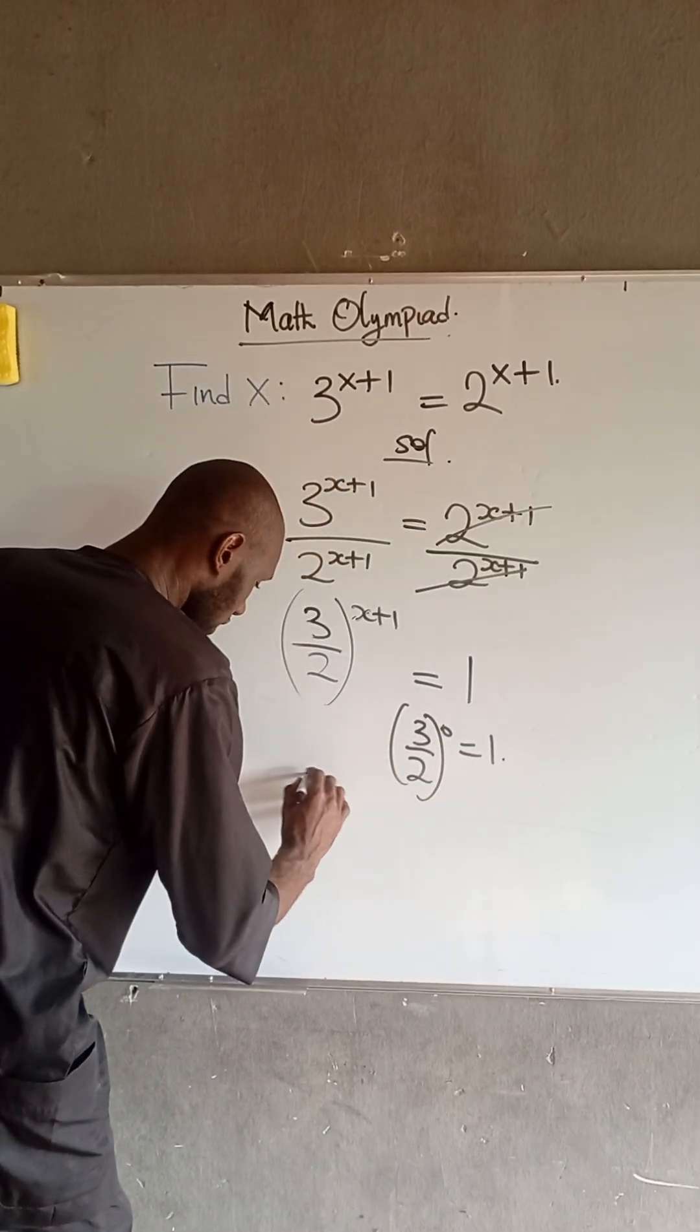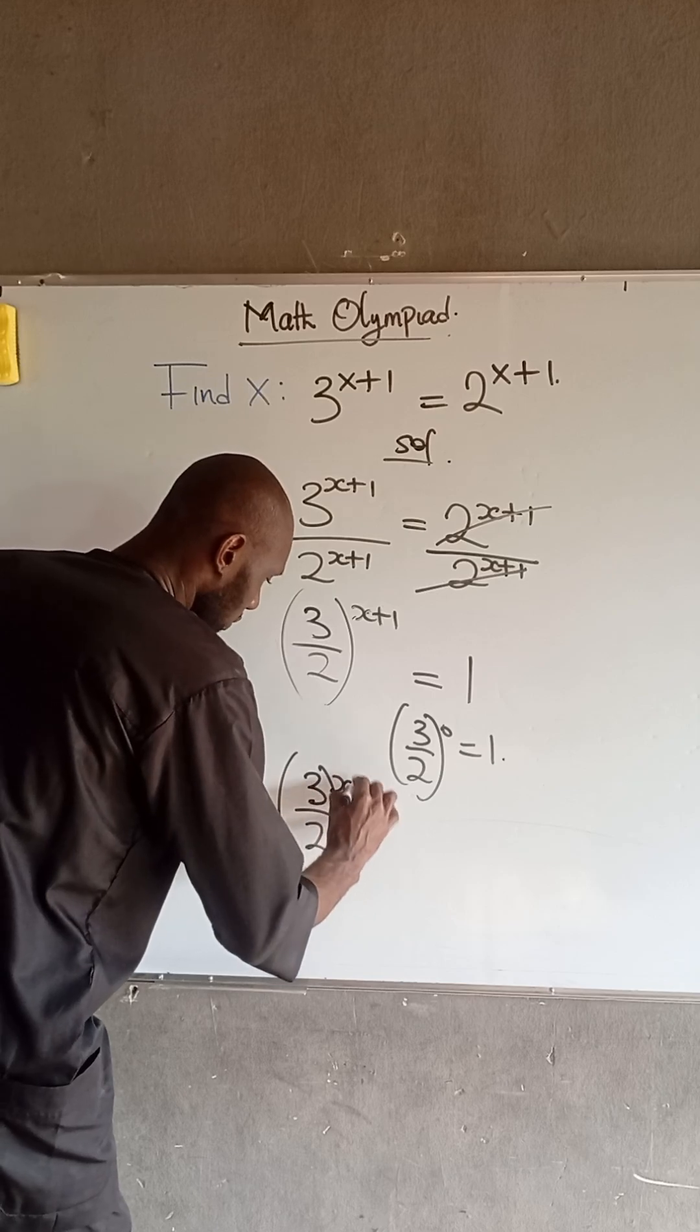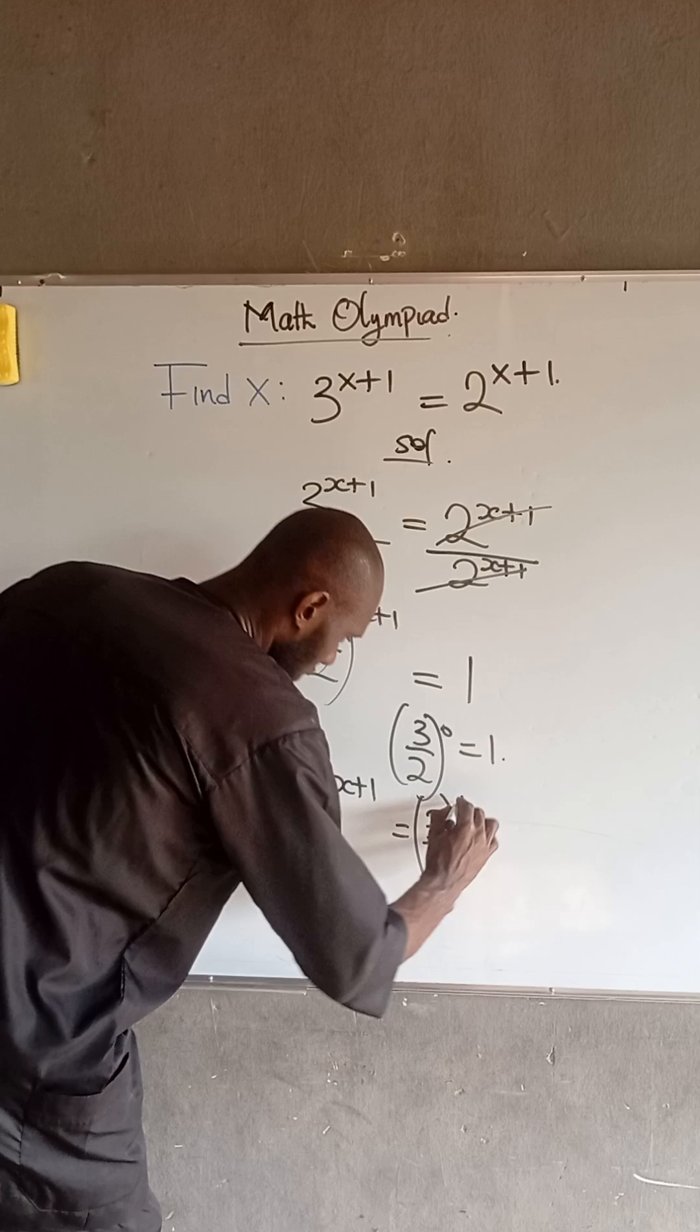So therefore, we have that 3 divided by 2 raised to the power of x plus 1 is equal to 3 divided by 2 raised to the power of 0.